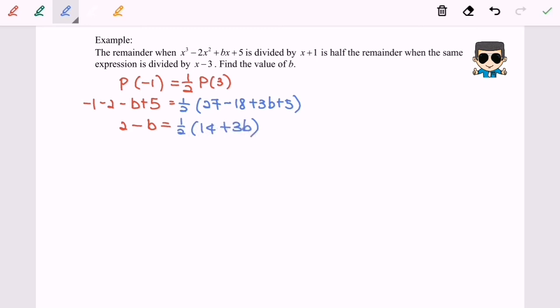By simplifying the equation, I'm going to multiply both sides with 2. So I will have 4 - 2b, which is equal to 14 + 3b. So rearrange, I will have -10, which is equal to 5b, and b will be equal to -2.